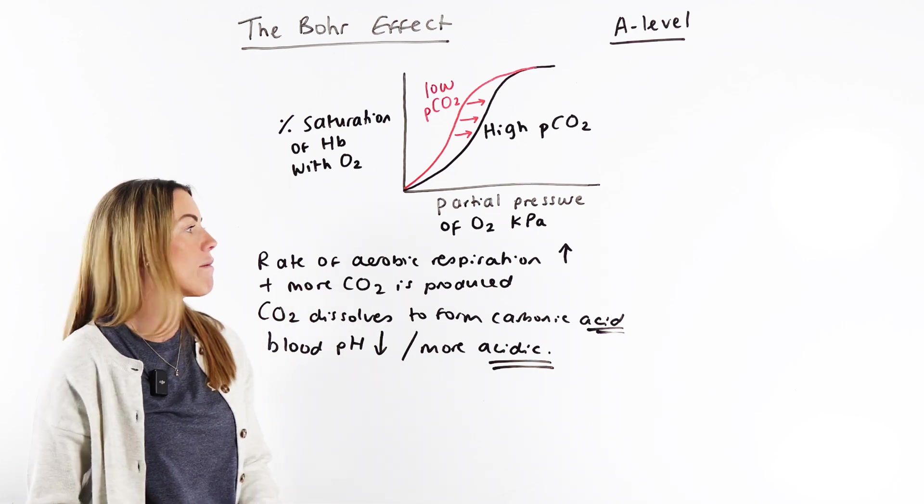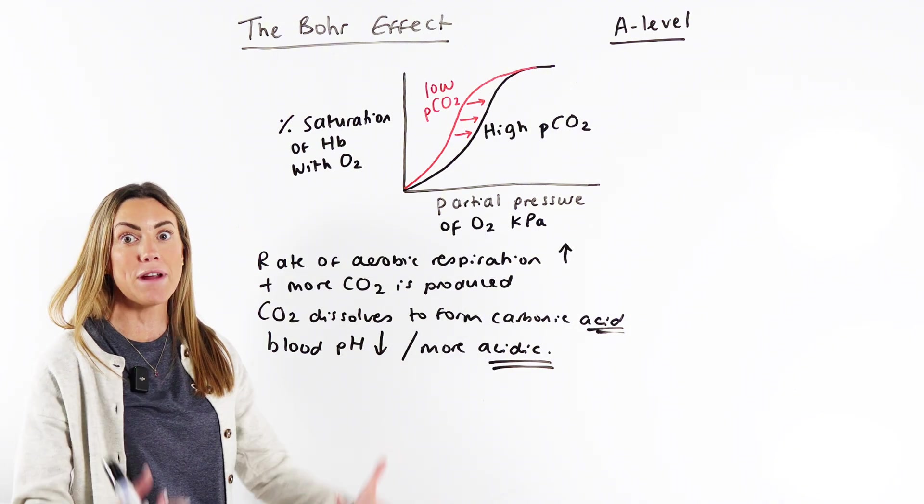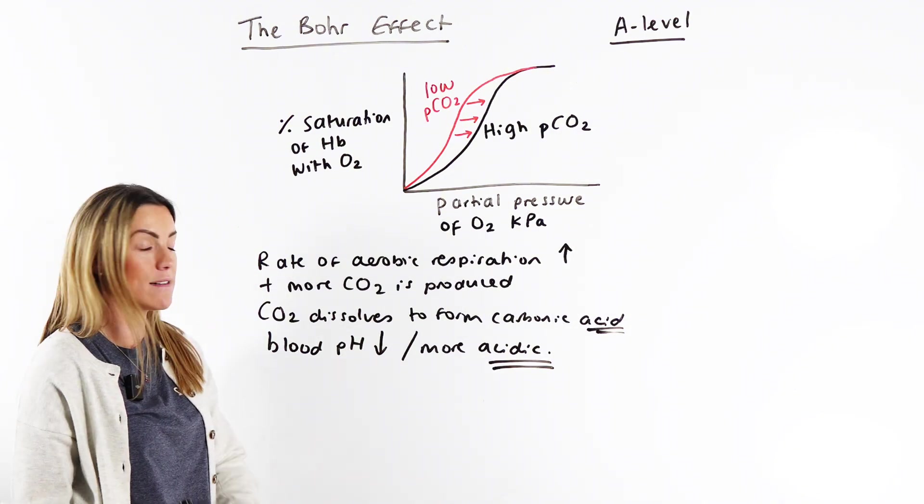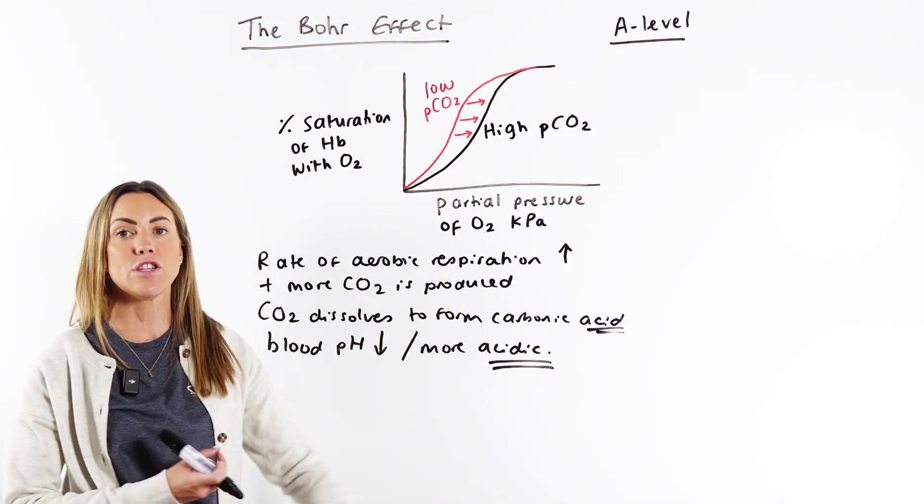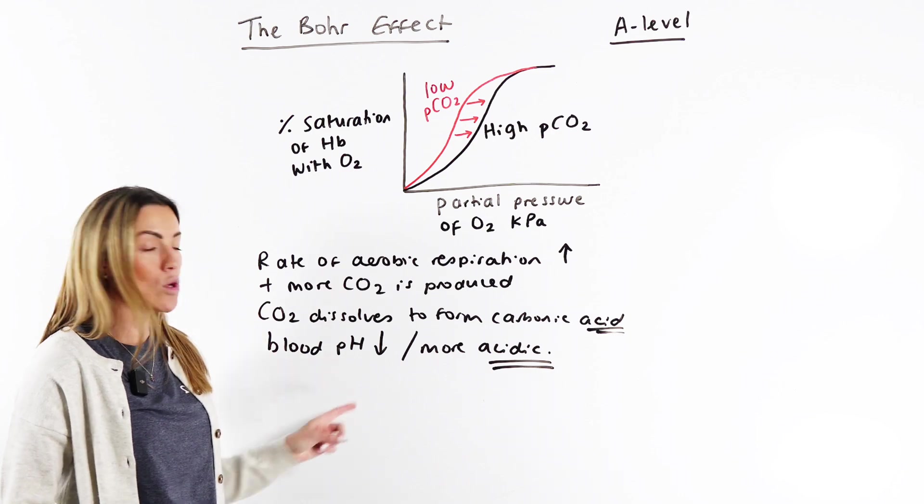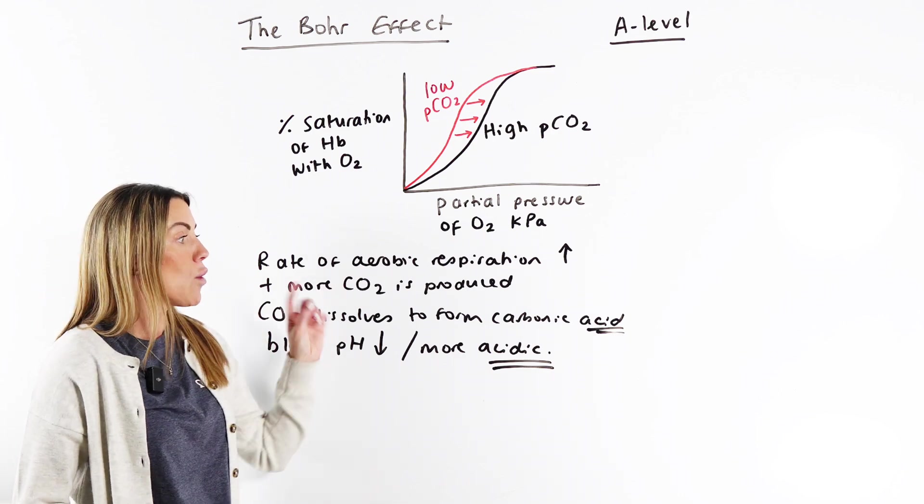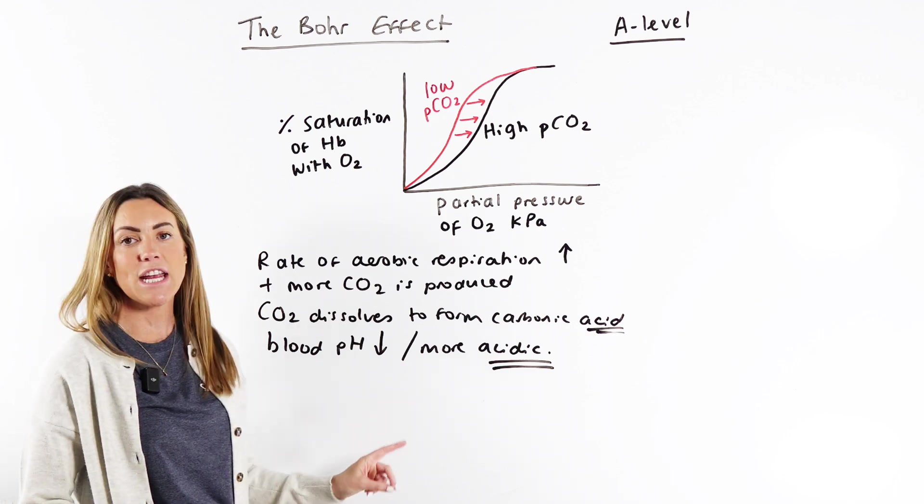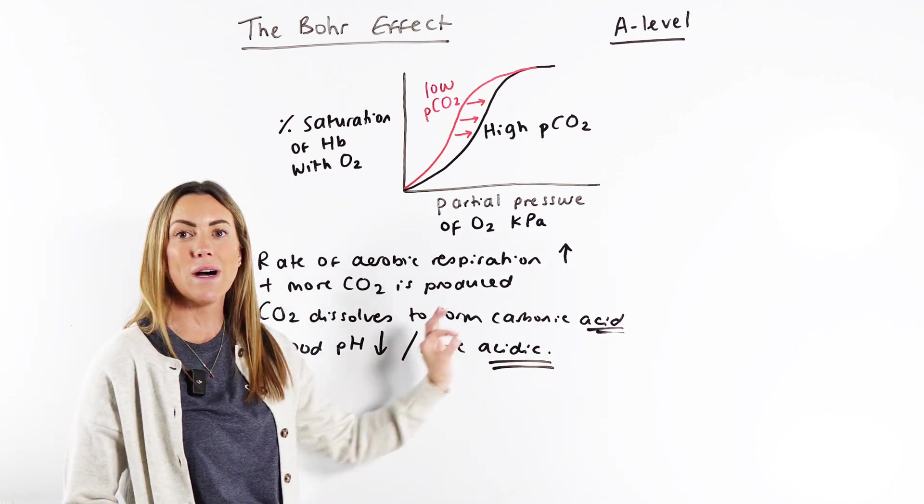So let's go through what we've got so far. Increase in respiration during exercise, particularly of muscle cells. They're doing more respiration, producing more CO2. There's more CO2 diffusing into the blood, which forms carbonic acid that lowers the pH of the blood or makes the blood more acidic.